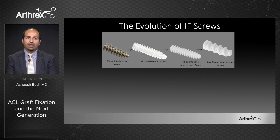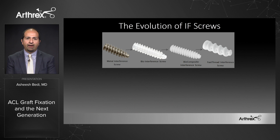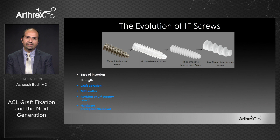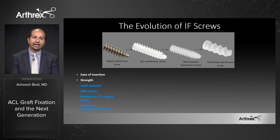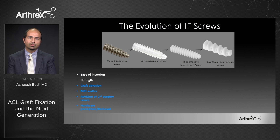That gives us the opportunity to talk about how screws have changed over time — a migration from metal screws to more modern biocomposite screws. Metal screws were relatively easy to insert and strong, but offered challenges. As discussed in our previous papers, they can abrade or damage the graft, cause artifact on follow-up imaging, and can be problematic at the time of a second surgery — both with removal and with loss of bone stock.